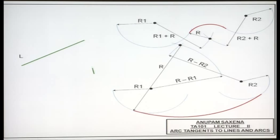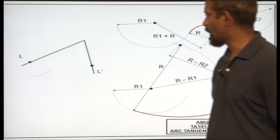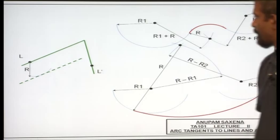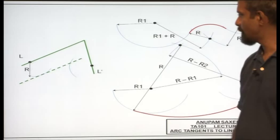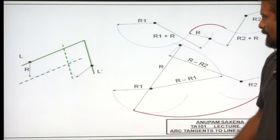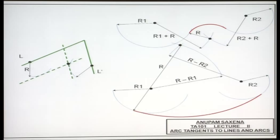So given line L and L prime, take any point on this line, draw an arc of radius r, draw a line which is parallel to this line. With any point over here on line L prime draw an arc of radius r and draw a line parallel to this line. So you will actually be having these two dashed lines intersecting at some point and with this point as center and the radius r it is possible for you to draw an arc which is tangent to both these lines.